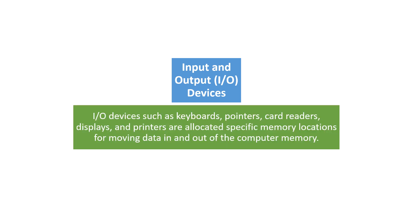Next are the input and output devices, such as keyboards, pointers, card readers, and printers. These are allocated specific memory locations for moving data in and out of computer memory.